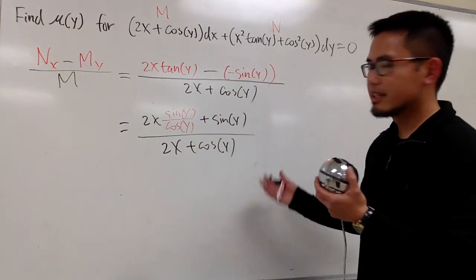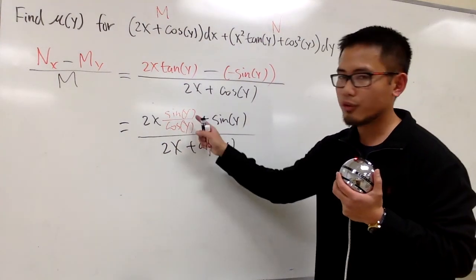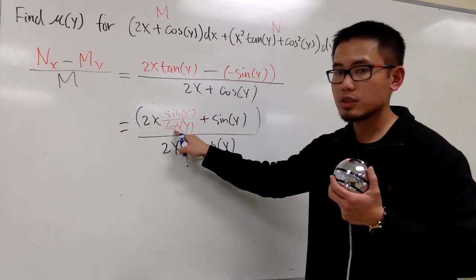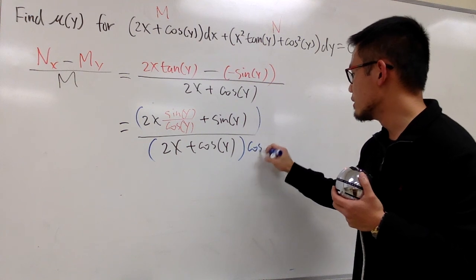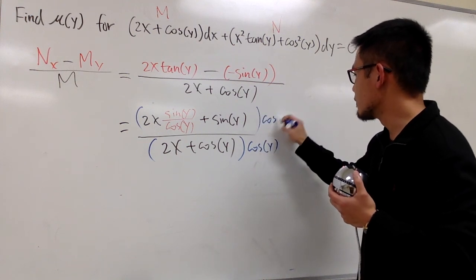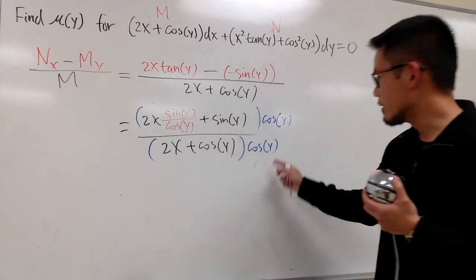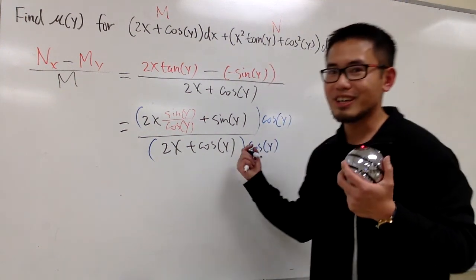Still not exactly clear, right? But this is a complex fraction, because of this little fraction in the big one. Well, we can just multiply the top and bottom by this cosine y, so that we don't have to deal with complex fractions anymore. So that's multiplied by cosine of y, top and bottom.